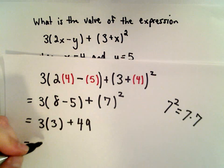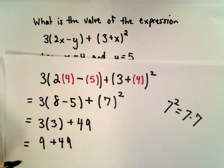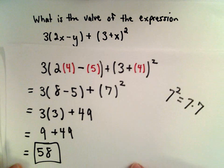3 multiplied by 3 is going to give us a value of positive 9. So 9 plus 49, that's going to give us the value of 58, and that will be our solution.